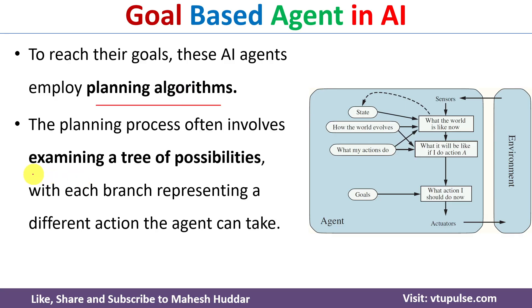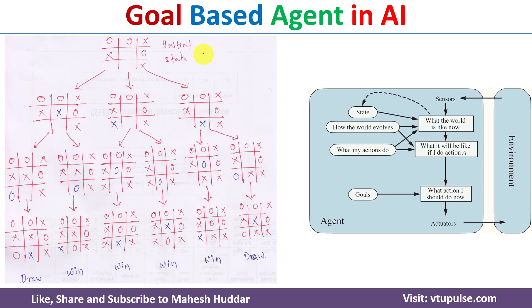The planning algorithm examines a tree of possibilities, and out of those possibilities it selects one action which will lead to the goal.